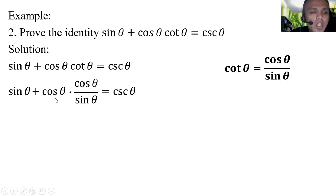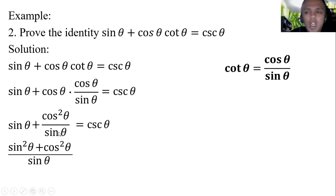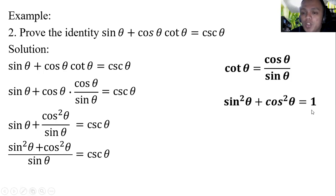One step at a time. Multiply cosine theta times cosine theta to get cosine squared theta over sine theta. The LCD of sine theta and cosine squared theta over sine theta is sine theta. Sine theta times sine theta is sine squared theta, plus cosine squared theta, all over sine theta, equal to cosecant theta. The value of sine squared theta plus cosine squared theta is 1, from the fundamental identities.